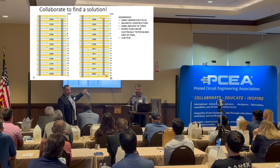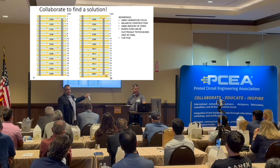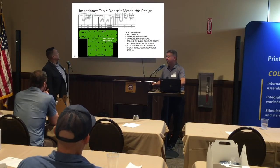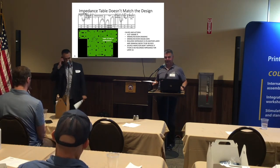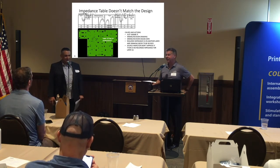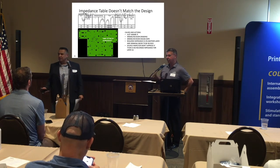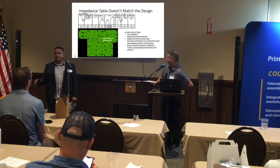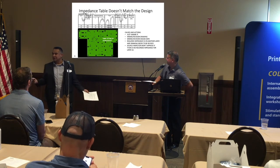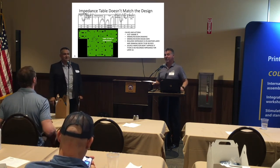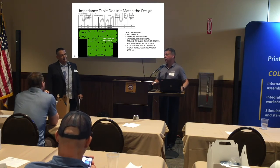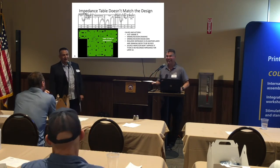The key takeaway: get with your fabricator from the very beginning — don't toss garbage over the wall and expect gold in return. Scenario eight: a job called out impedance on layer 10, but layer 10 is a ground plane. 'Is your drawing not up to date? Did you move the impedance to a different layer?' 'Can't you just build it and ignore it?' 'No — your source inspector is going to check. You need documentation that says disregard impedance on layer 10, or you need a new drawing.'